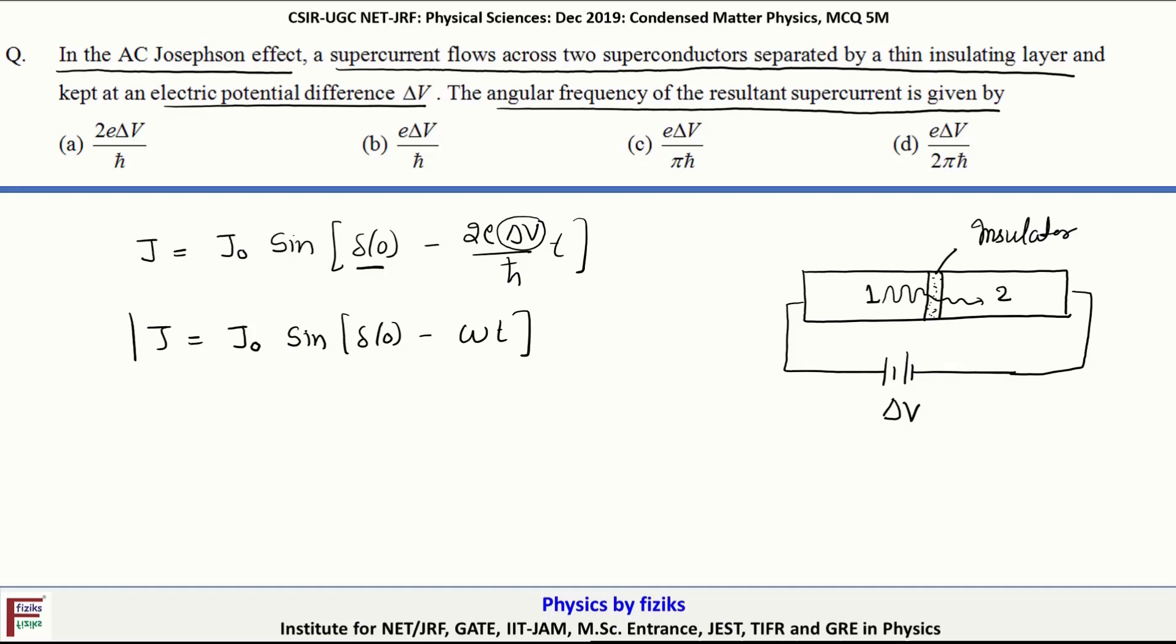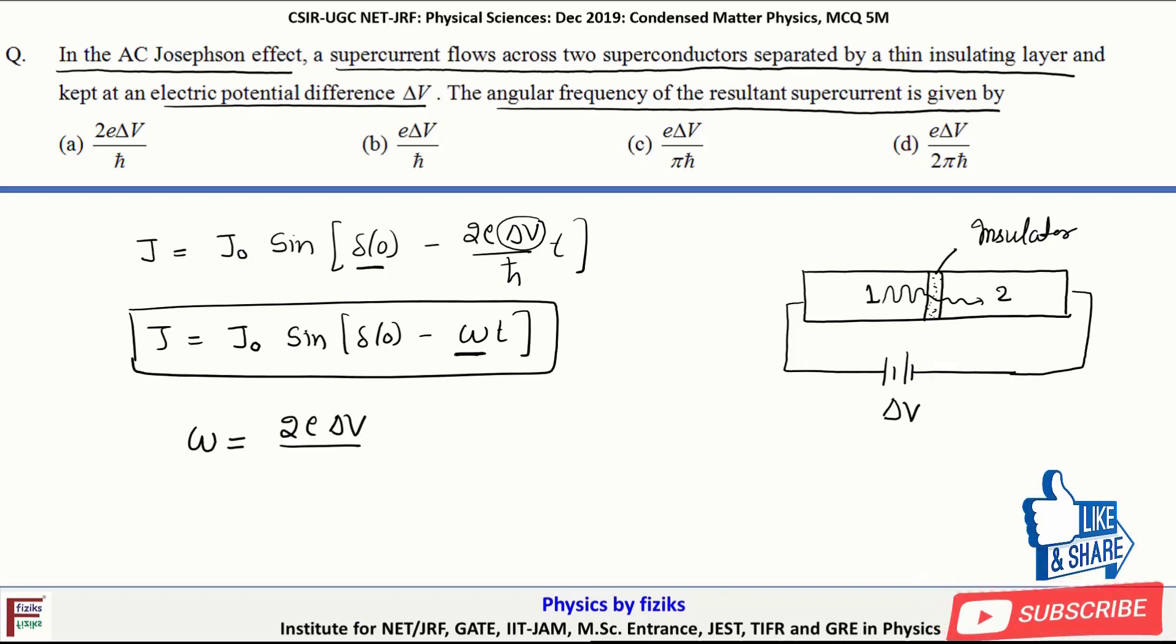This equation represents that the current flowing across the junction is oscillatory in nature, oscillating with angular frequency omega. The expression for this angular frequency omega is 2e times delta V upon h-bar.